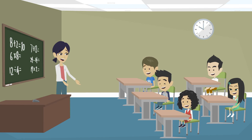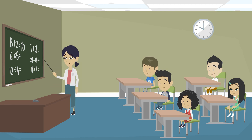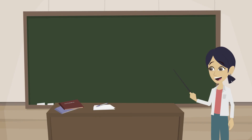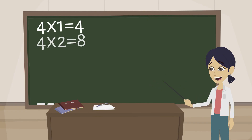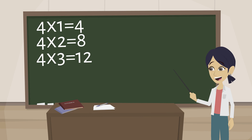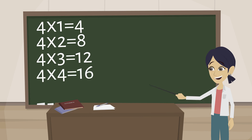Sing with me, children! The table for 4. 4 1s are 4, 4 2s are 8, 4 3s are 12, 4 4s are 16,